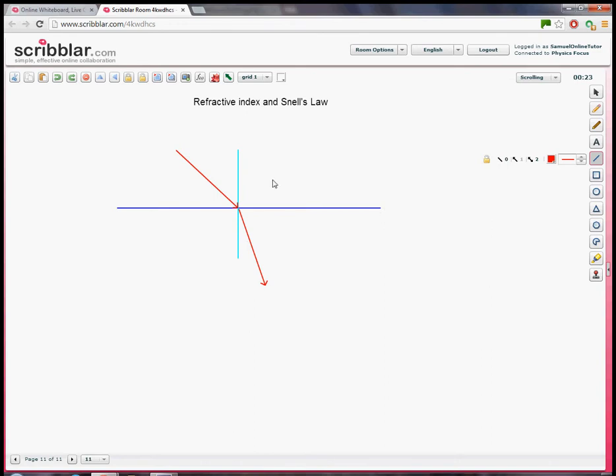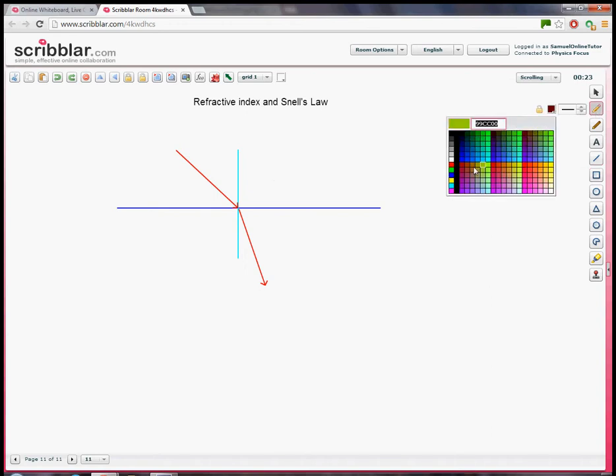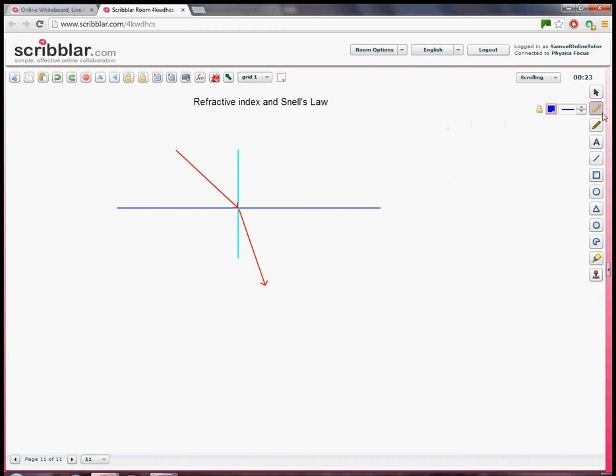Now, at A level we deal with this a little bit more mathematically. And there's an equation that we can use to describe what's going on here. That's to do with the refractive index, which is what we're talking about now.